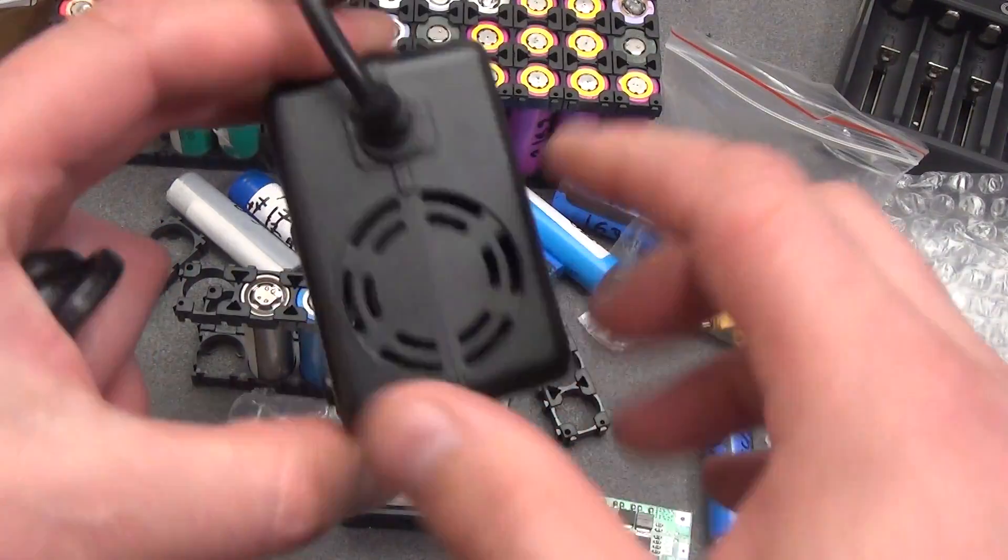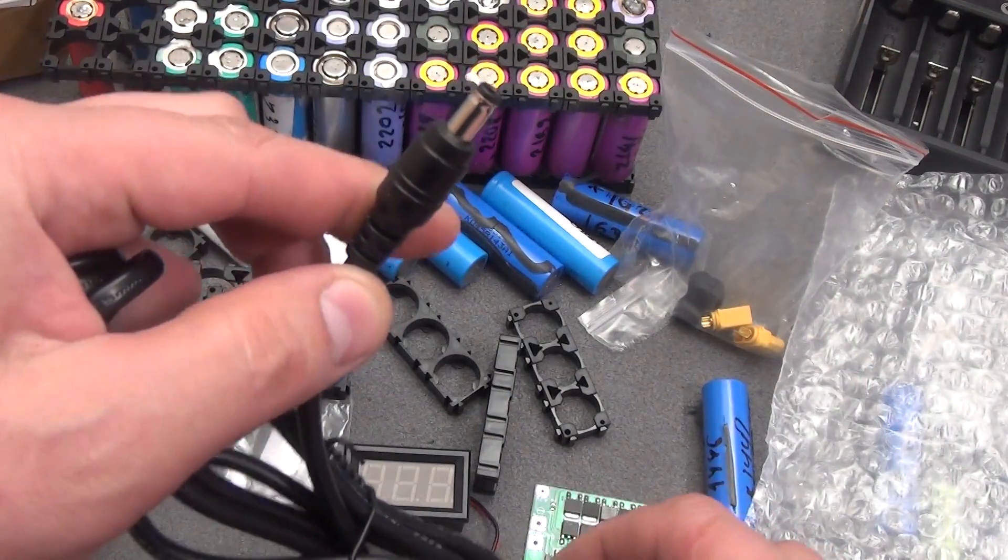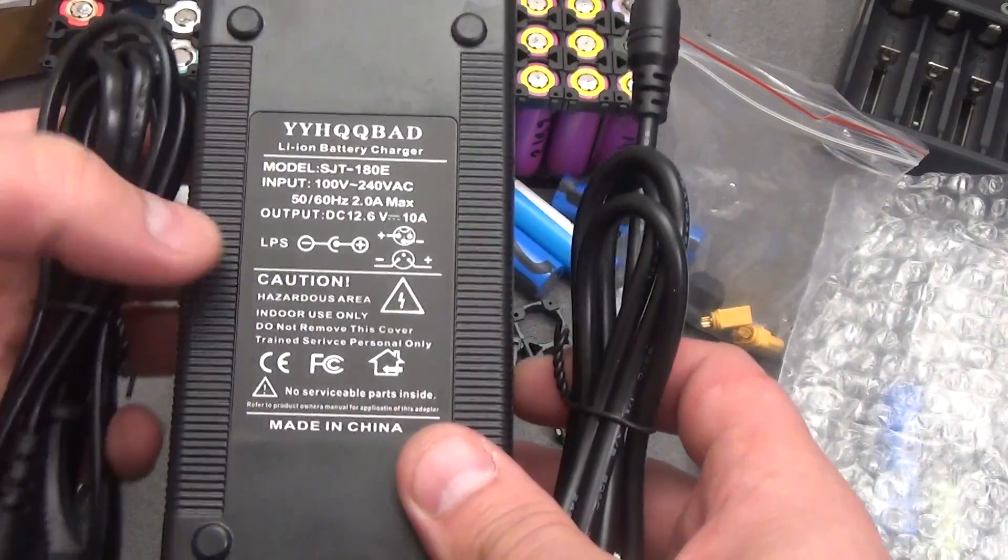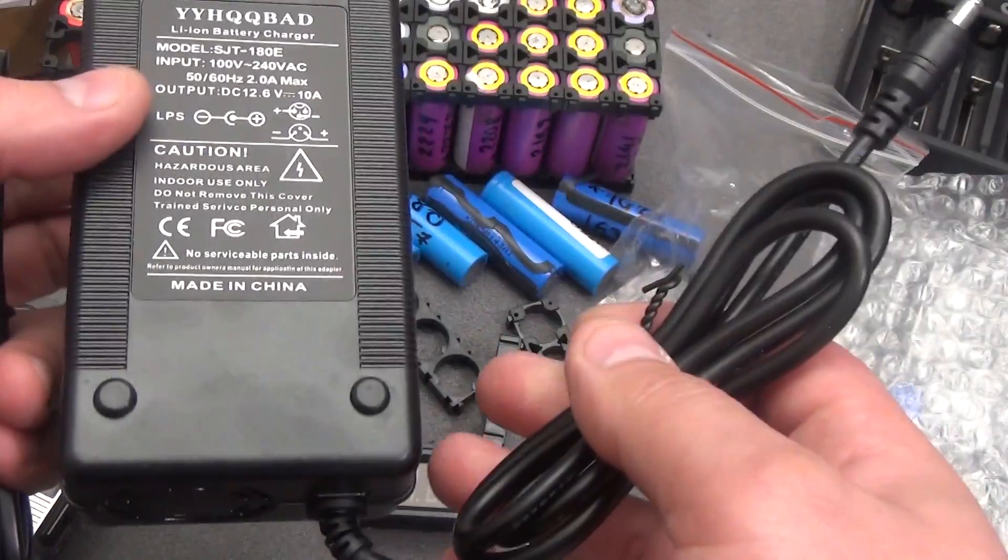This is what it looks like. It has cooling. At the output, almost a standard dad. Well, it is connected to a 220V network. 12.6, that is, it will charge and turn off.